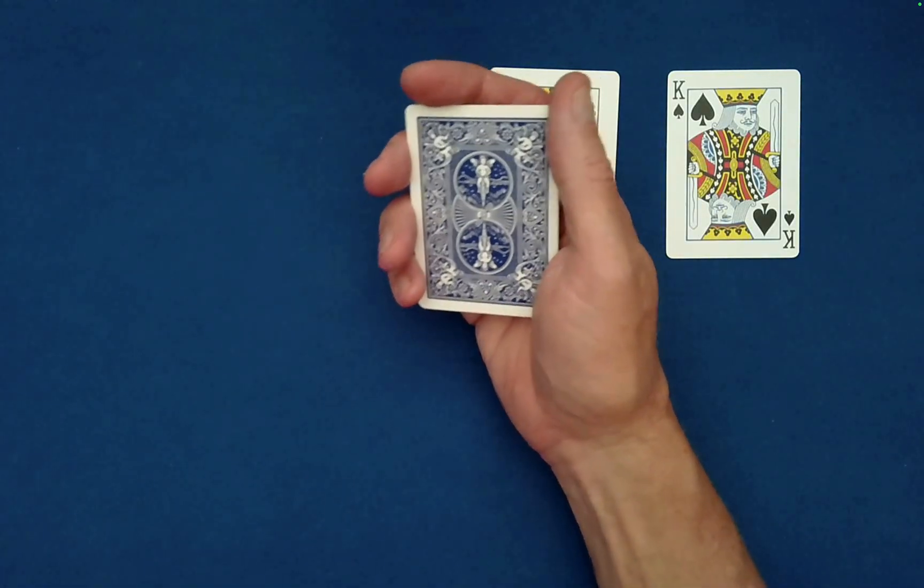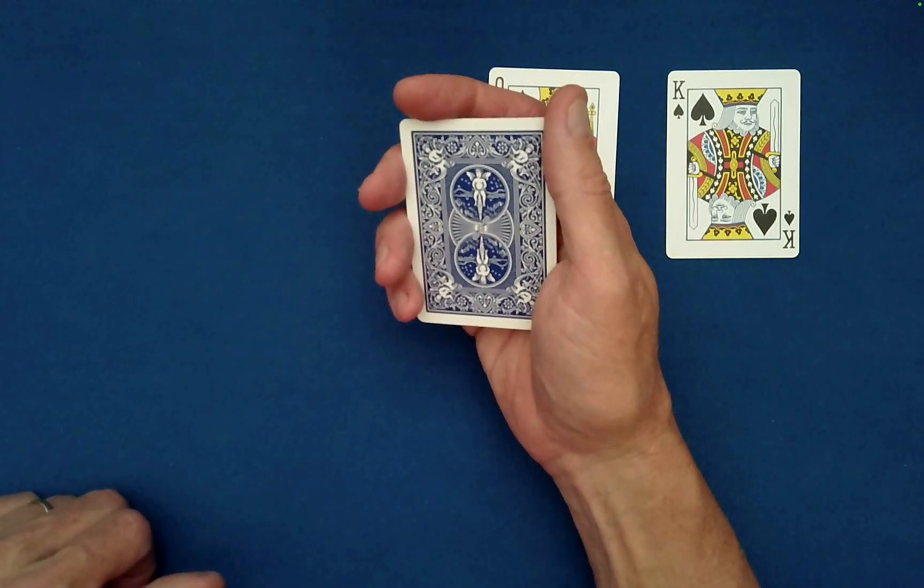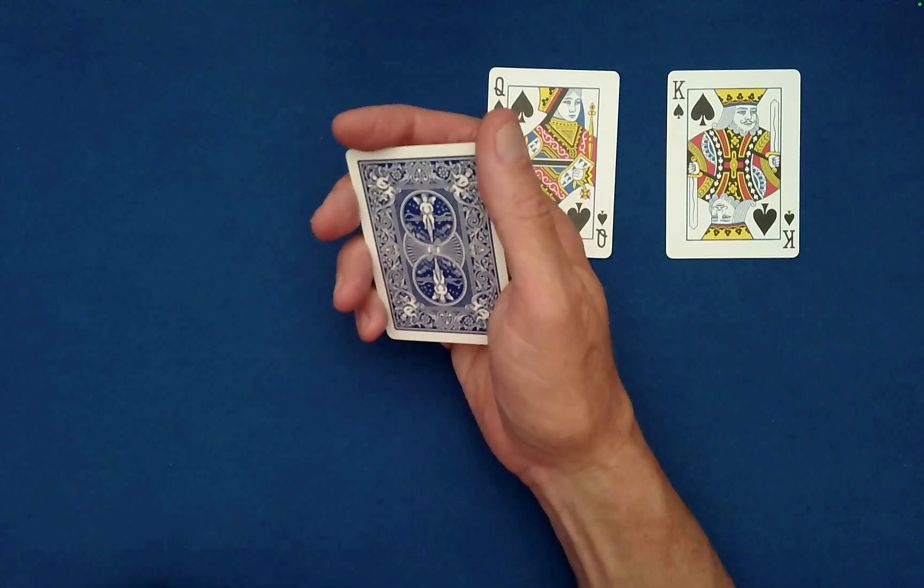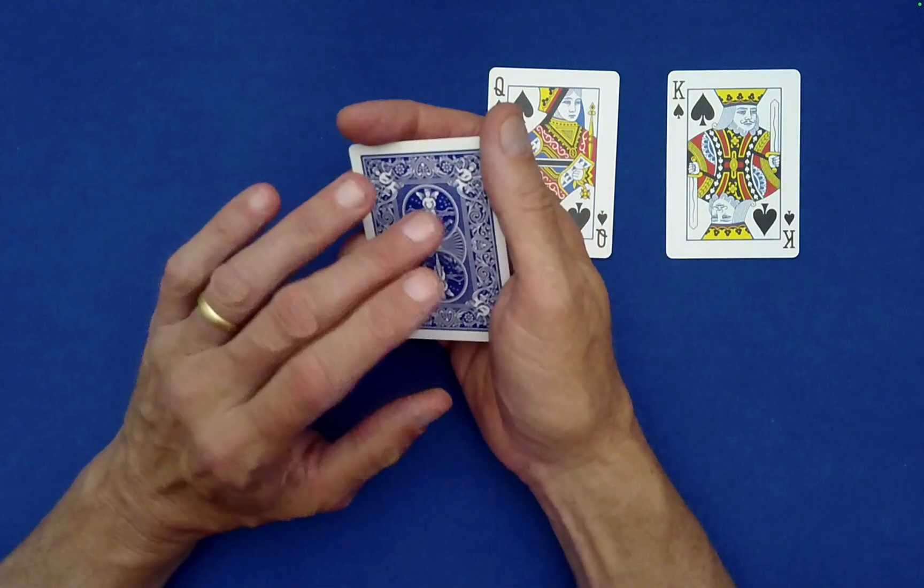You ask the spectator, what card did you see or what card are you remembering in this little packet? They may say the nine of hearts or they may lie. So let's say they lie. Let's say they say seven of clubs as the supposed card that they just saw instead of the nine of hearts.